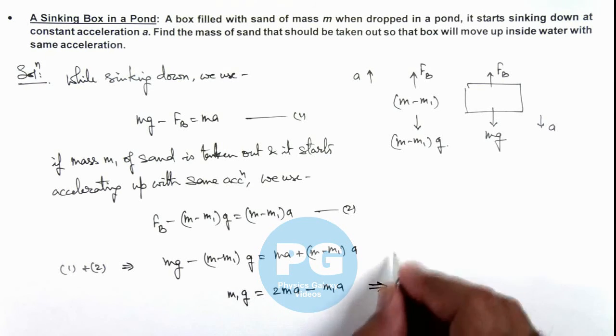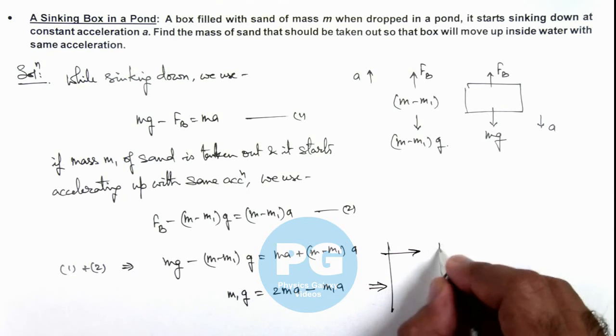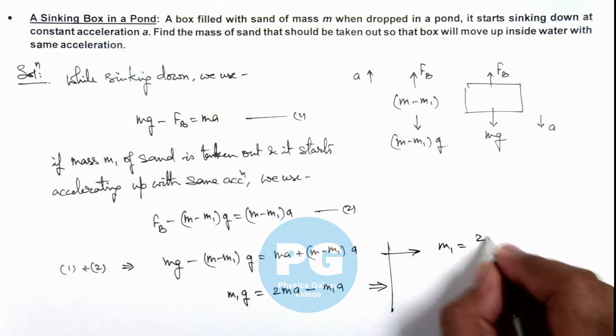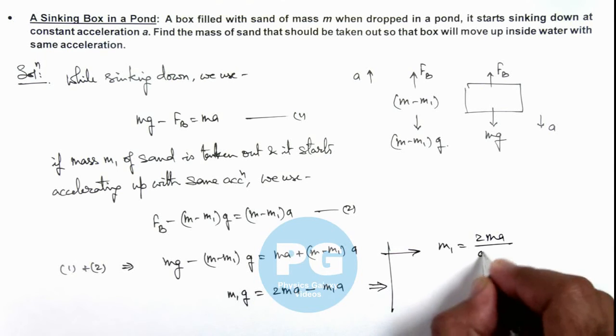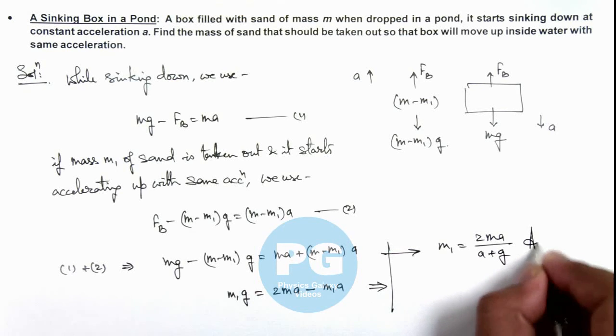So on simplifying this, over here we can see the result for m1 is given by 2 m ay divided by (ay plus g). That is the final result of this problem.